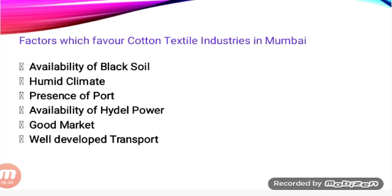These industries are mainly concentrated in Maharashtra, Gujarat, West Bengal, Uttar Pradesh, and Tamil Nadu. In Tamil Nadu, Coimbatore has 200 mills out of 435 mills total, so Coimbatore is known as the Manchester of South India. Other centres for cotton textile industries in Tamil Nadu are Erode, Tirupur, Karur, Chennai, Tirunelveli, Madurai, Thoothukudi, Salem, and Virudhunagar.